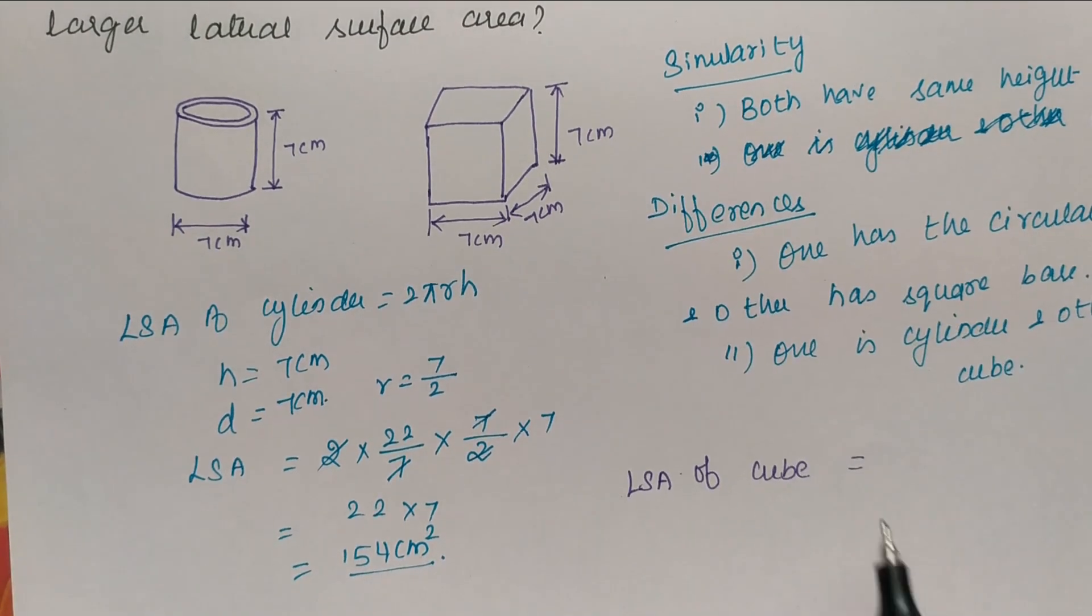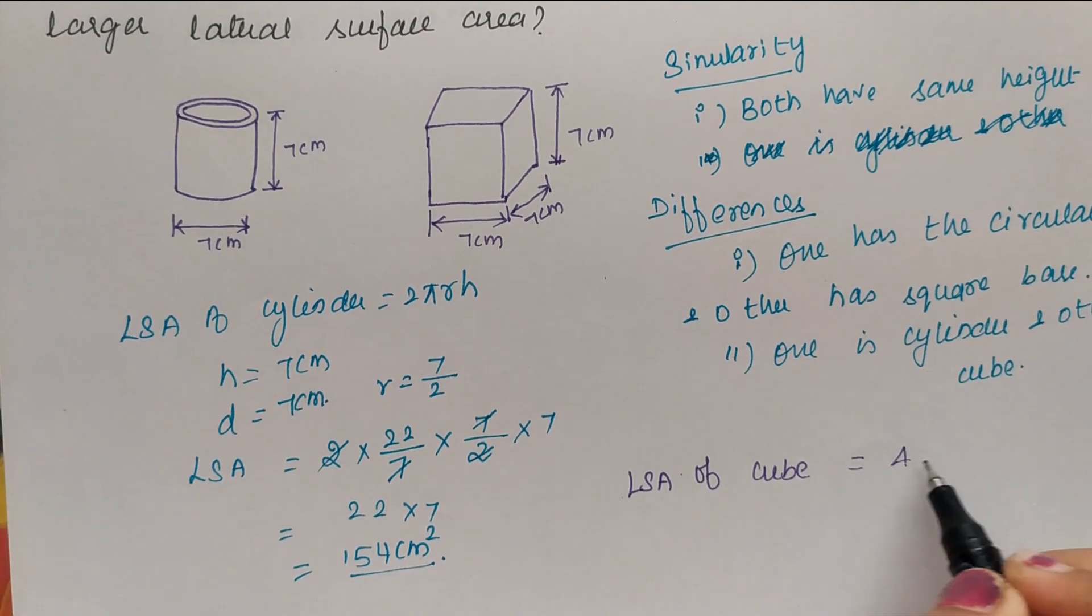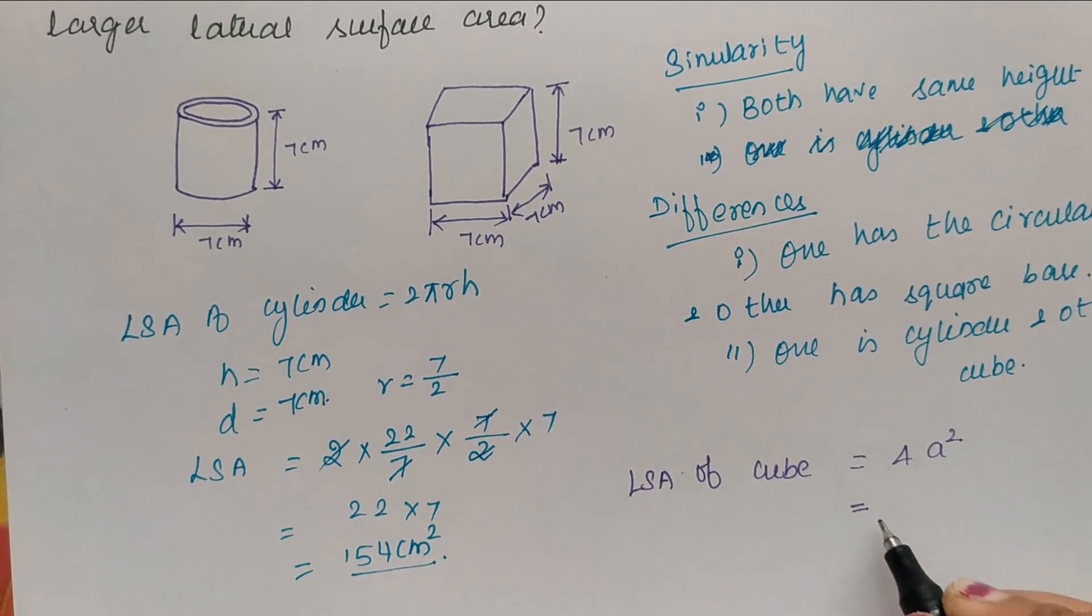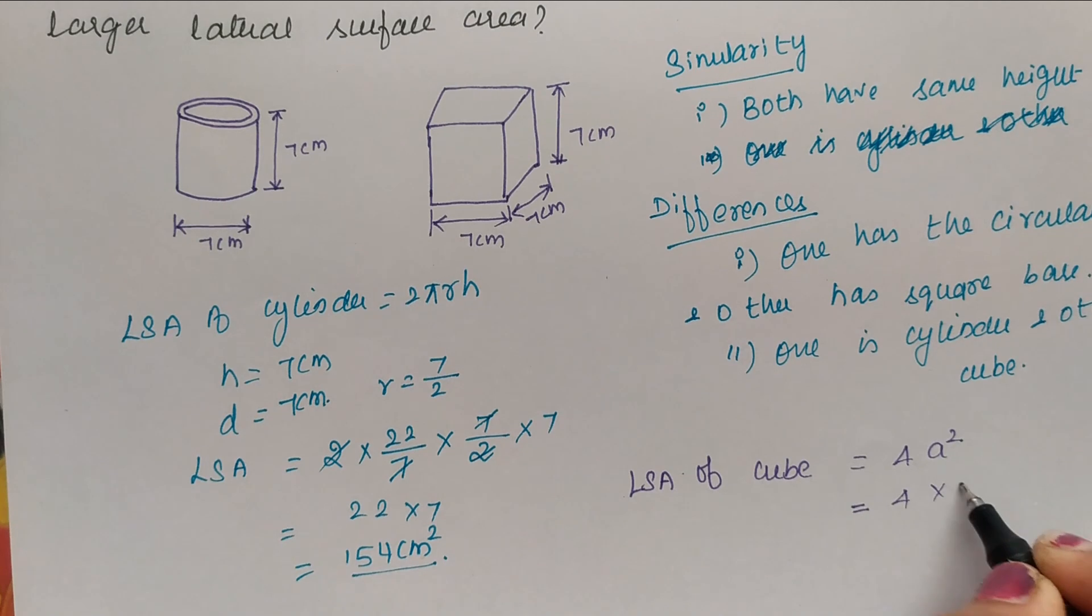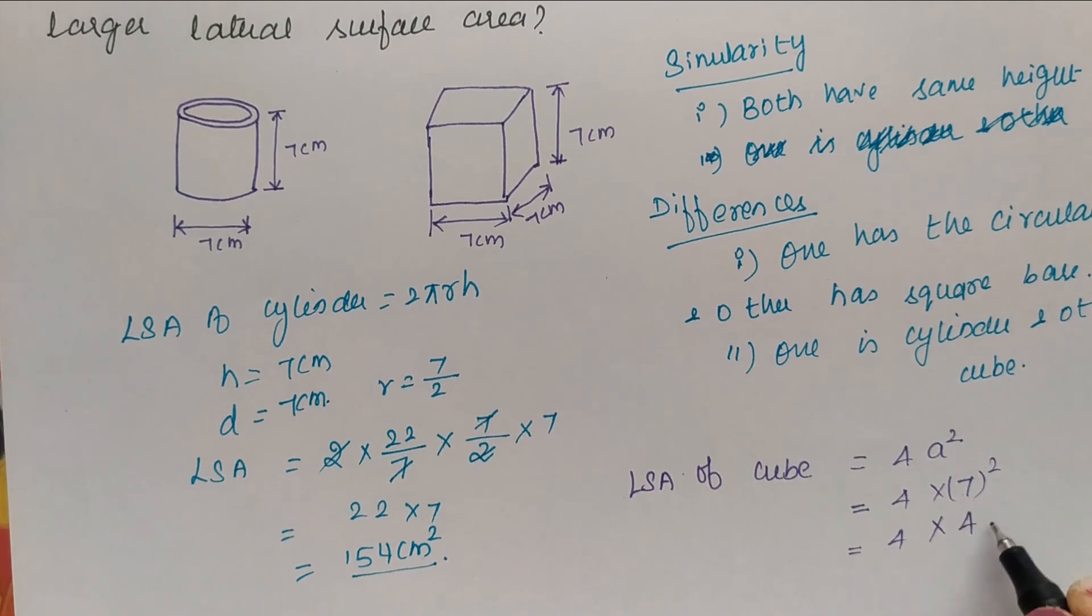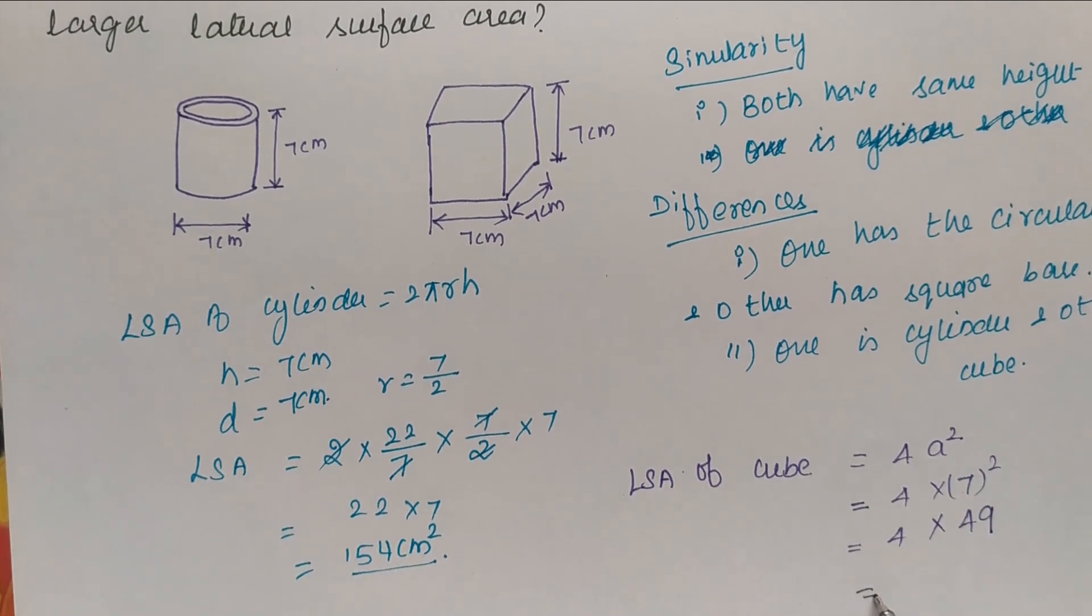Next is lateral surface area of a cube. Lateral surface area of a cube is 4 times side square, 4a² where a is the side of a cube. 4 times 7 square. 7 times 7 is 49, so 7 square is 49. 4 times 49 is 196 cm square.